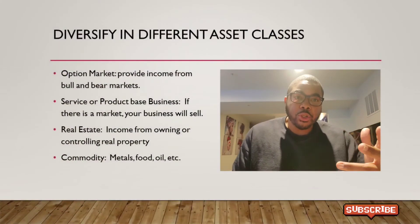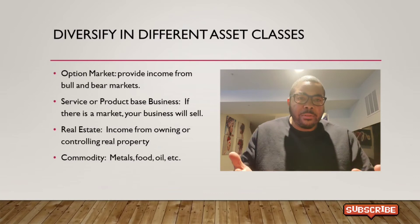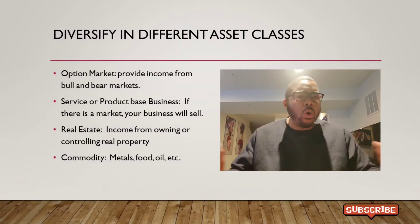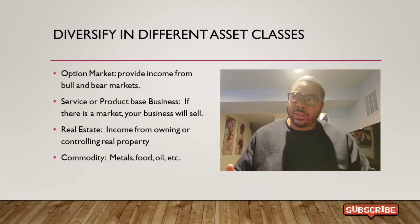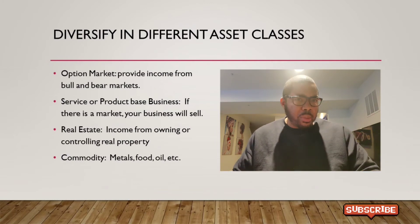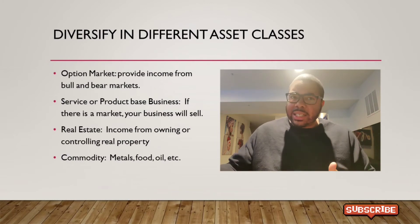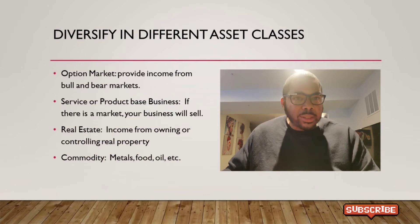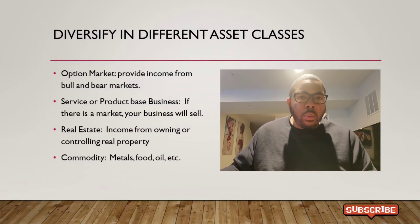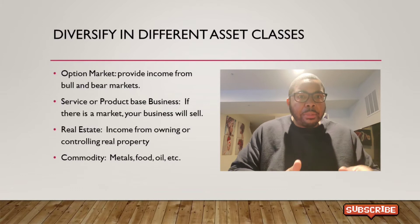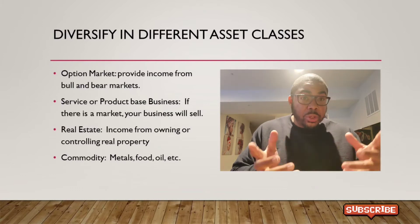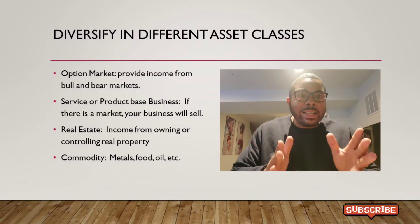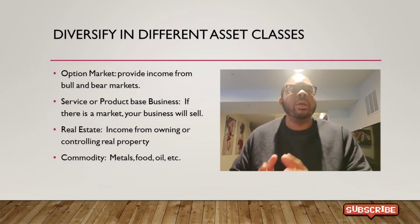That's why we need to diversify into different asset classes — and there are a lot of them. You've got the options market. The options market looks at the stock market, but it's not the stock market — it's a derivative that goes up and down with it. That is separate from the stock market, so it's its own asset class.